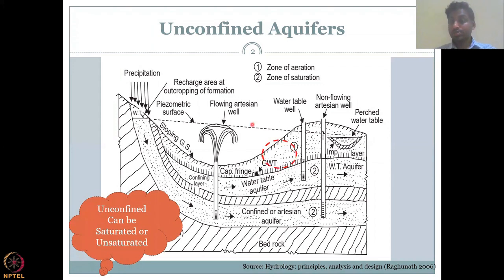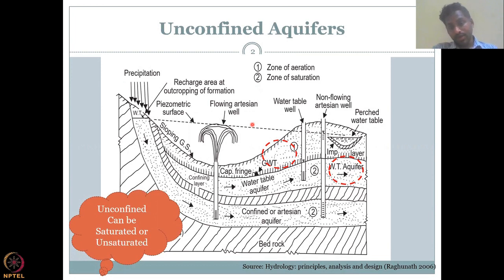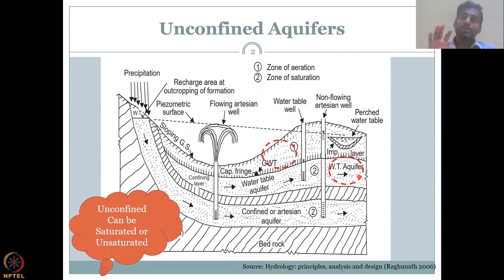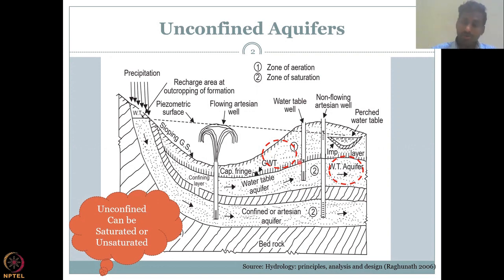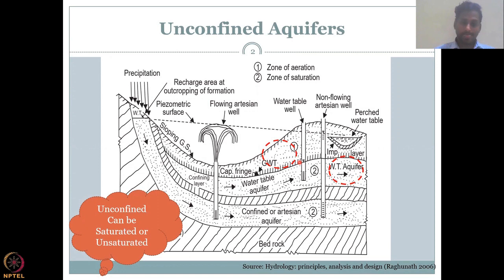Let us look at the equation applicable for the unconfined zone and especially the zone of unsaturation. The difference between saturated and unsaturated is that in saturation the porosity is 100 percent water-occupied, whereas in the unsaturated zone it is a function of water availability — neither 100 percent nor 0 percent. It fluctuates depending on water taken up by plants, pumping, and recharge. When recharge happens, more saturation occurs; when water is pulled out, there is more discharge.